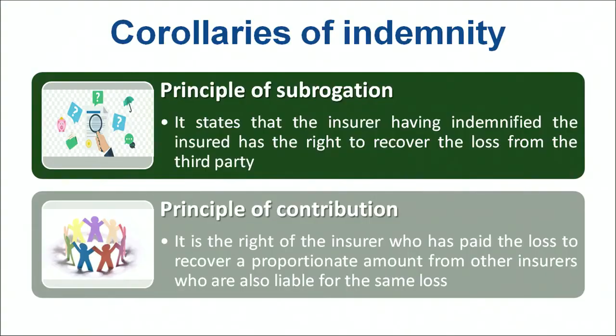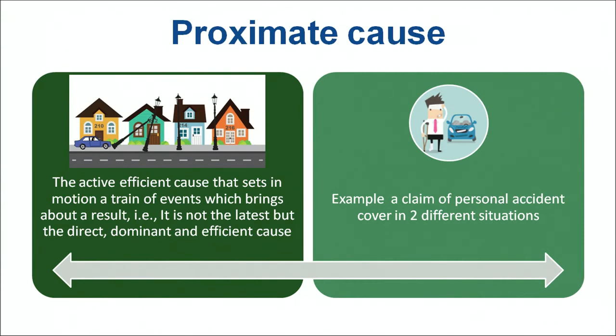Principle of contribution states that if you have two or three policies with different companies, the claim amount will also be proportional to the amount of sum assured. For example, if you have taken policies for 10,000, 20,000, and 30,000 from different companies and you have a claim of 6,000 rupees, that will be divided in proportion — 1,000, 2,000, and 3,000 respectively. There is also a proximate cause principle attached, which says the insurance company will consider only the main and dominant factor while considering payment of a claim.